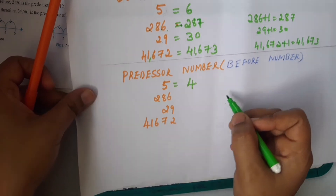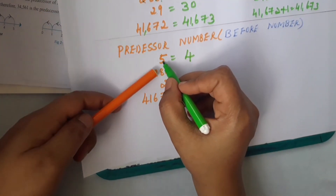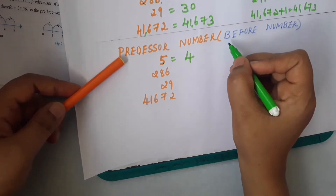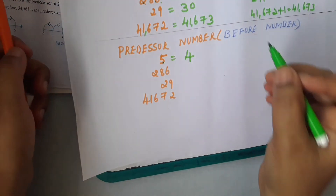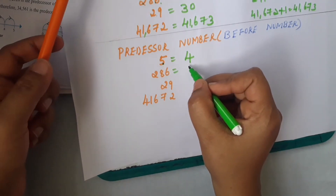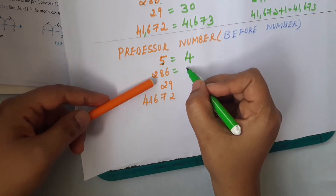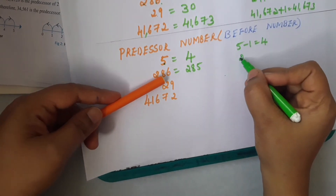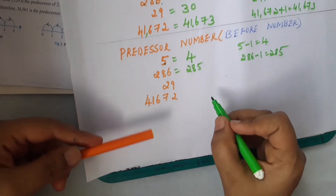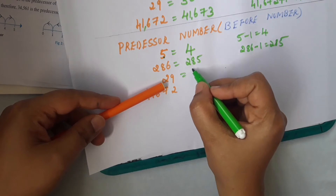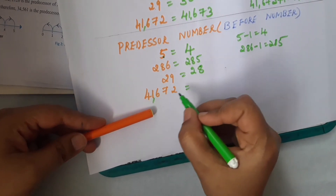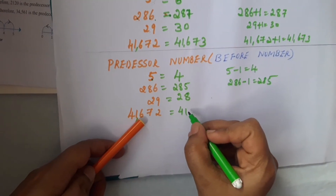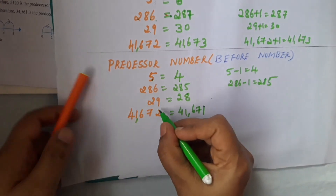Now examples for predecessor. Predecessor means the number before. Remember: P for predecessor and B for before go together. Before 5 is 4, before 3 is 2. Predecessor of 286 is 285, meaning 286 minus 1 equals 285. Predecessor of 29 is 28. Predecessor of 41,672 is 41,671 — we subtract 1 from the ones place.